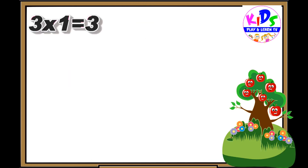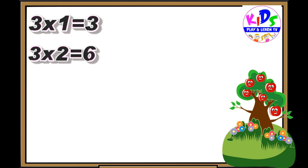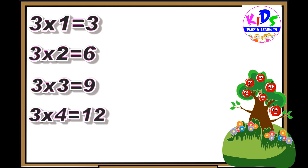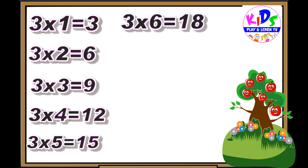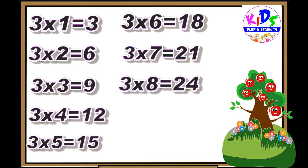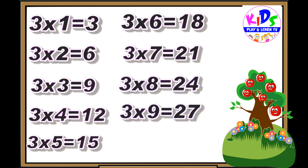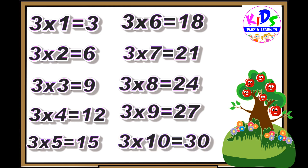Three ones are three. Three twos are six. Three threes are nine. Three fours are twelve. Three fives are fifteen. Three sixes are eighteen. Three sevens are twenty-one. Three eights are twenty-four. Three nines are twenty-seven. Three tens are thirty.